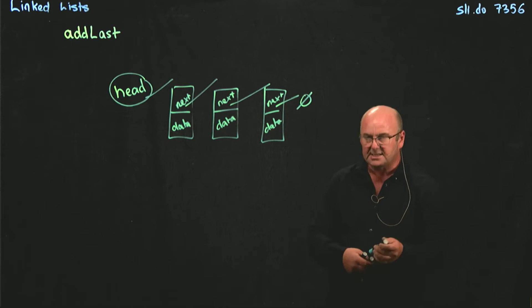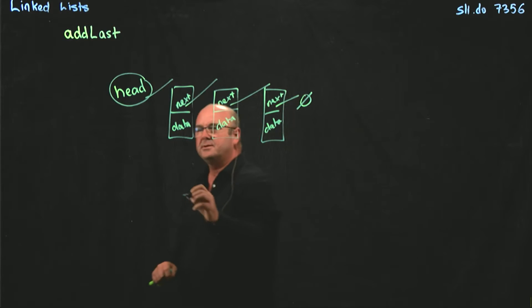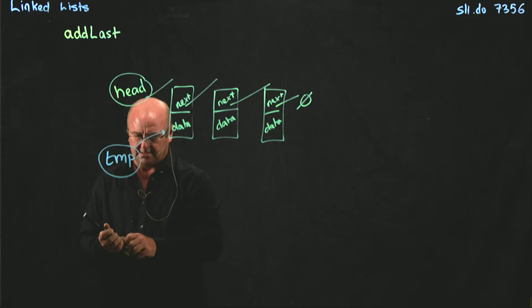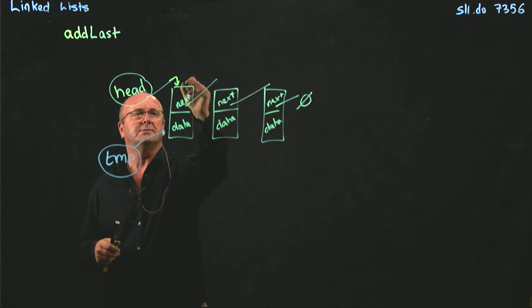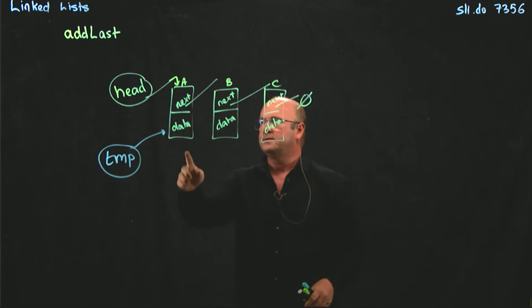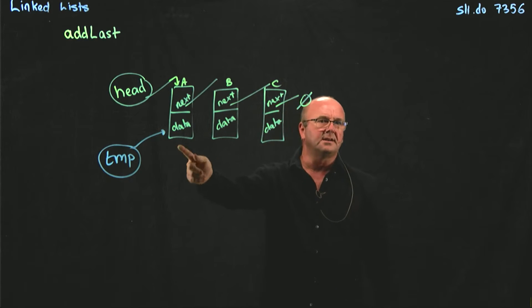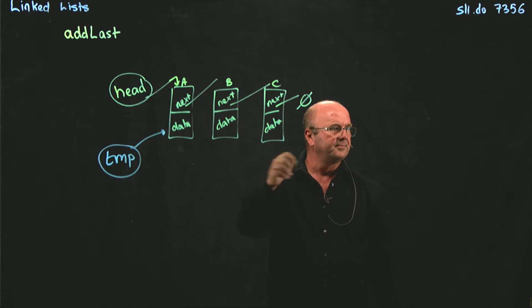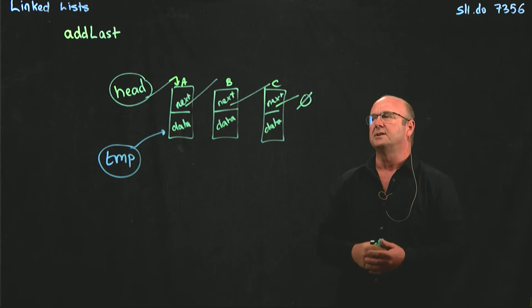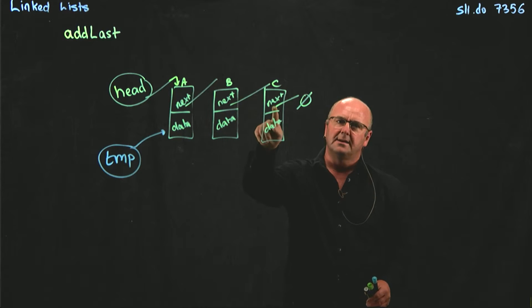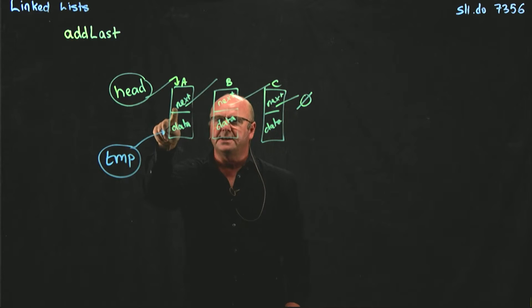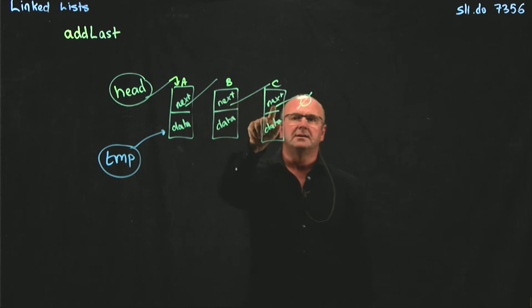Instead, what we want to do is set a temporary pointer, and our temporary pointer is going to start off pointing to head. Head points to A, B, C. How do we know if a node has another node connected to it? Because it's not pointing to null. If a node is not pointing to anything, like C, then its next variable points to null. A.next is not null, B.next is not null, C.next is null.